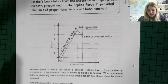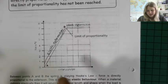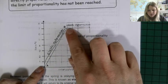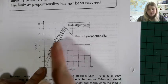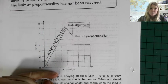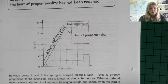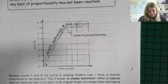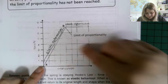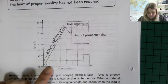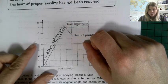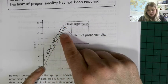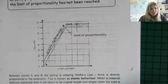When we do that experiment, we should find a graph roughly like this. Up to a particular size of force, the force is directly proportional to the extension — meaning for every newton you add, the spring extends by the same amount every time. Looking at the graph, every roughly two newtons it goes up by one centimetre. Because it's a straight line through the origin, the two things are directly proportional to each other.